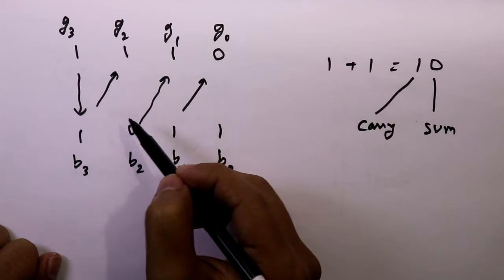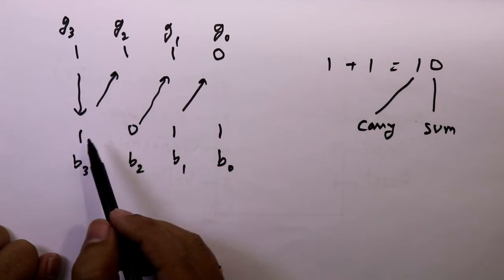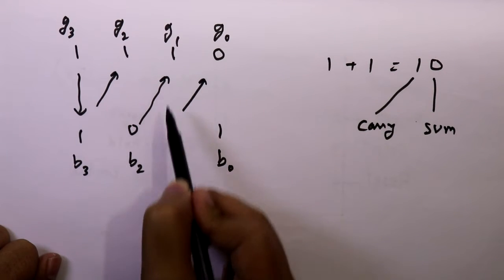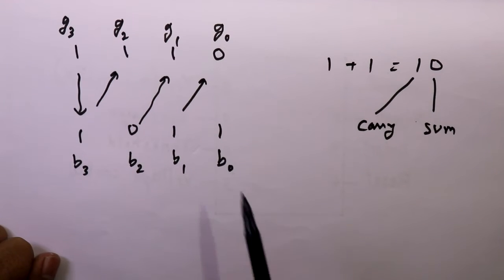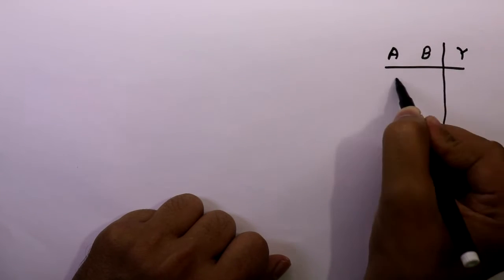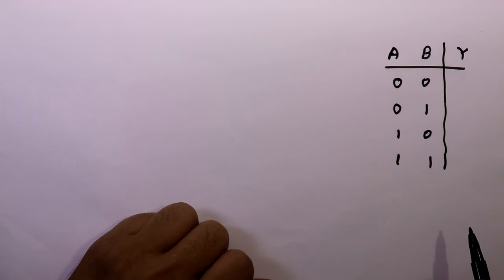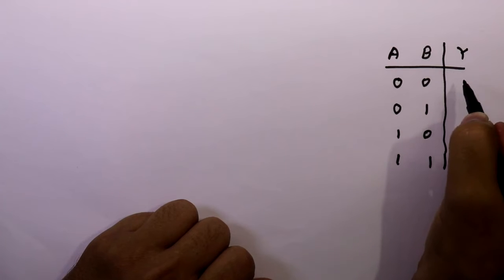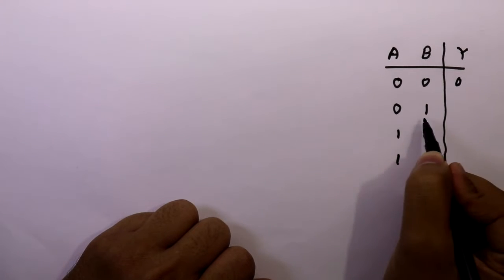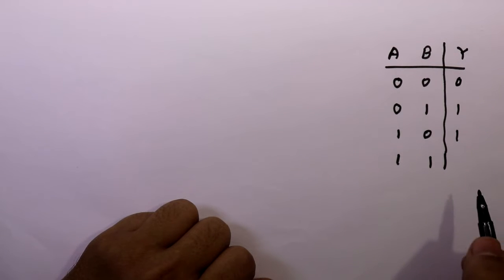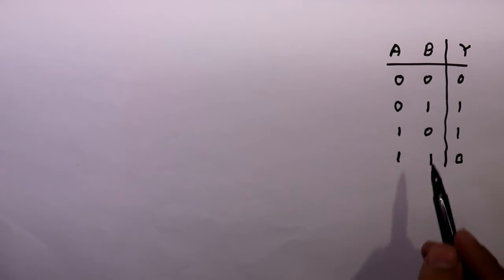We can see this conversion follows the XOR rule. 1 XOR 1 gives 0, 0 XOR 1 gives 1, and 1 XOR 0 gives 1. Looking at the XOR truth table: if the inputs are the same the output is 0, and if the inputs are different the output is 1. I have already explained this — the link is in the description below.